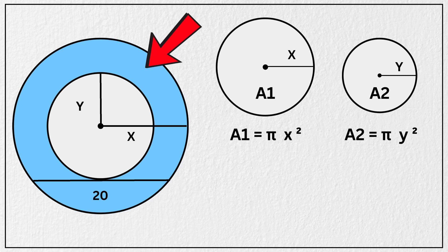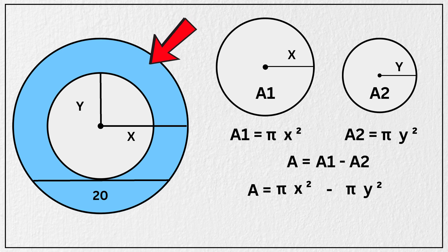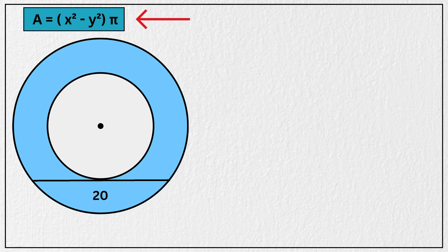So the area of this blue shaded ring will be a1 minus a2, which is pi times x squared, minus pi times y squared. Now taking pi common from left hand side we have, area of blue shaded ring equal to x squared minus y squared times pi. Let's put this here in the corner.